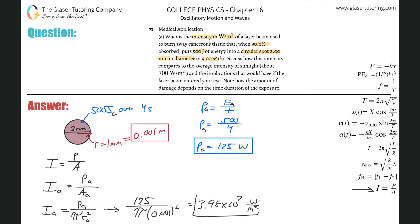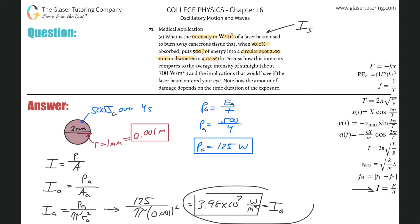You might say hooray — we found the answer. Well, not exactly. This is the intensity being absorbed. They wanted to know the intensity of the laser beam itself — in other words, the intensity being supplied. We need to make the connection between the intensity absorbed and the intensity supplied, and that's where the 90% value comes into play.